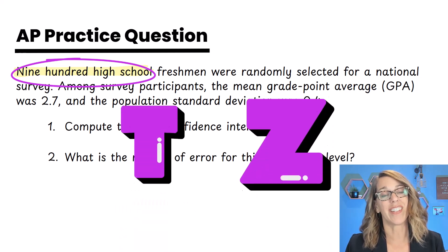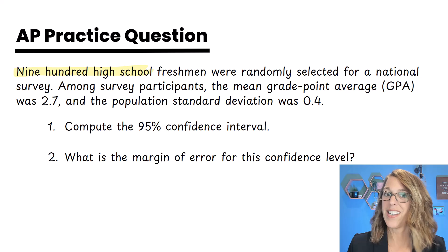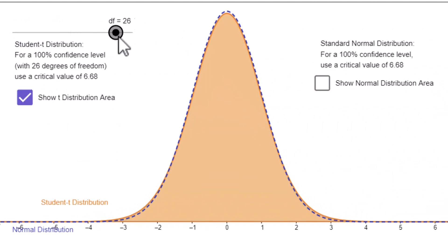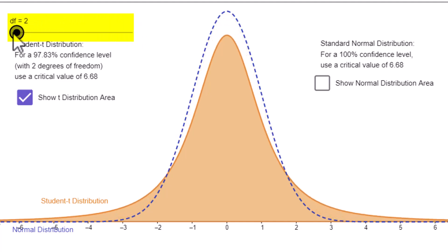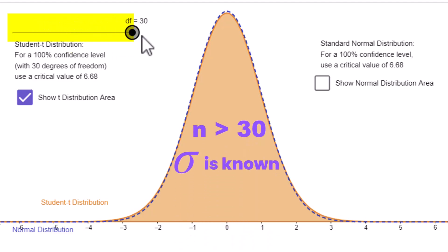And as I'm deciding between using the T interval or the Z interval, I know that my T distribution is approximating the normal distribution. And in order to use that normal distribution, I either need a sample size or degrees of freedom greater than 30, or the population standard deviation.